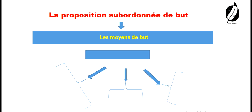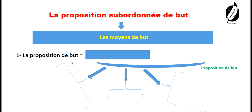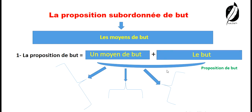Maintenant, on pose la question : quels sont les moyens utilisés pour exprimer le but ? D'après le schéma que vous voyez, on a trois groupes. Ces moyens ont presque le même sens, mais au niveau de l'utilisation, on effectue quelques changements. On verra ça dans les minutes qui restent. La proposition de but, c'est toujours un moyen de but plus le but. Le moyen de but varie, change.